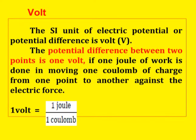Next, the volt. This could be asked in three-mark questions — concentrate on it. The SI unit of electric potential or potential difference is volt, noted by the letter capital V. The potential difference between two points is 1 volt. The formula is: 1 volt = 1 joule per 1 coulomb.